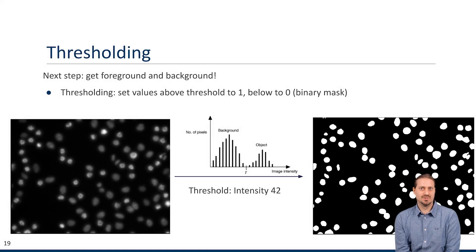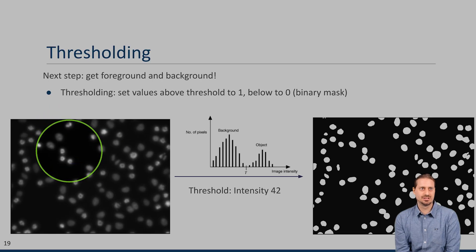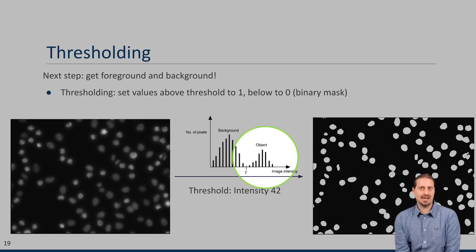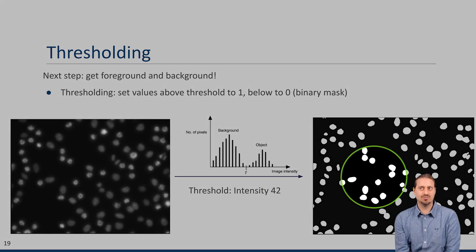The question is how to find a good threshold. A simple option is to look at the histogram of pixel intensities — plotting each intensity value for all pixels. We often see two peaks: a lower-intensity peak corresponding to the background, and a higher-intensity peak corresponding to pixels inside a nucleus. We choose an intensity between the two peaks. For our image, a good value is 42. All pixels above this threshold correspond to nucleus pixels because they have high intensity.